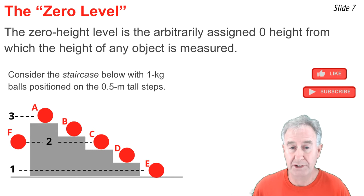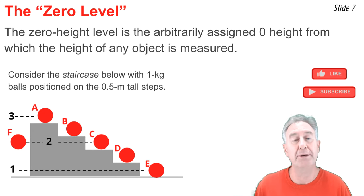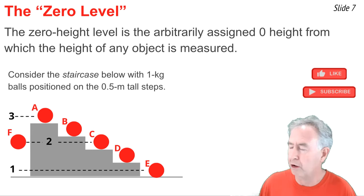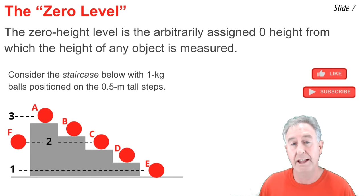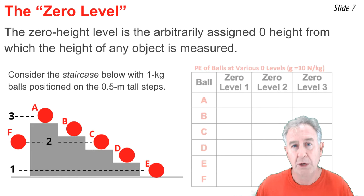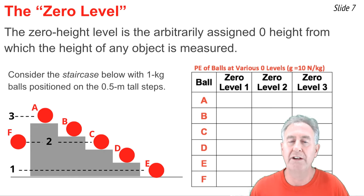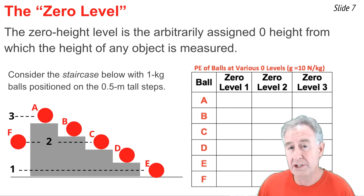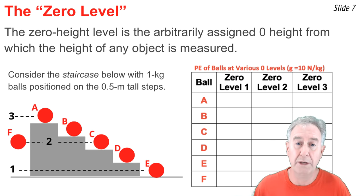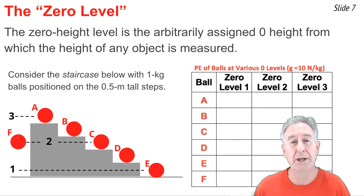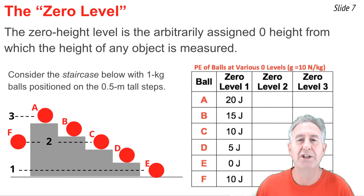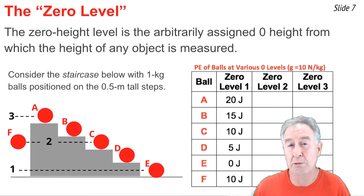Consider this staircase diagram with steps 0.5 meters apart and balls on each step having a mass of 1 kilogram. We'll calculate the potential energy of each ball using three arbitrary zero levels — level 1, level 2, and level 3 — recording values in a data table and using g = 10 N/kg. For zero level 1 at ball E (the lowest step), ball A is 2 meters above, ball B is 1.5 meters, balls C and F are 1 meter, and ball D is 0.5 meters above. We calculate PE using 1 kg × 10 N/kg × each height.